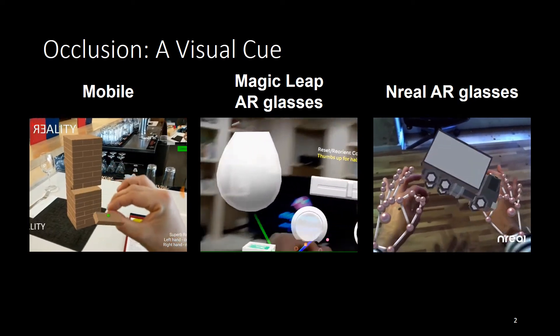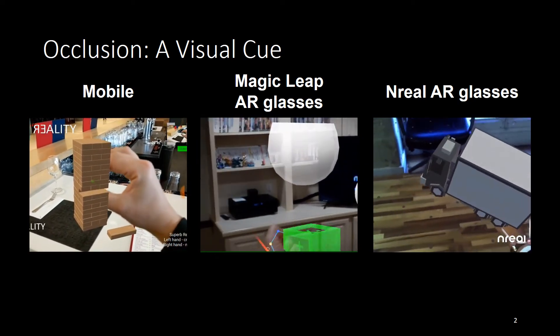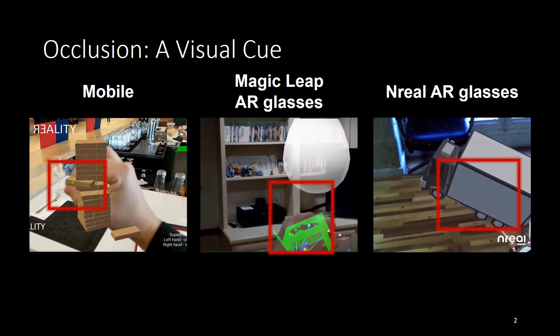To incorporate virtual objects into the real world and enable direct interactions with our hands, one main challenge comes out: handling the occlusion problem. Occlusion is a crucial visual cue allowing us to rank the relative proximity among objects in views.